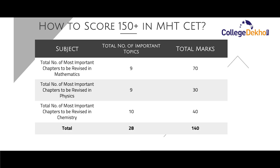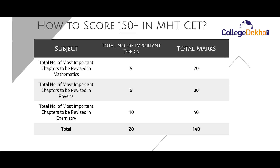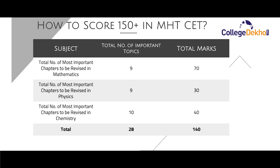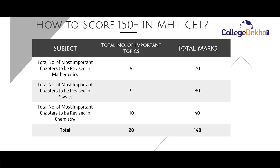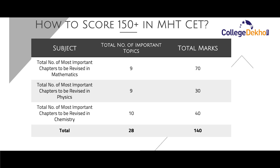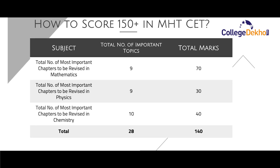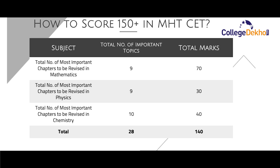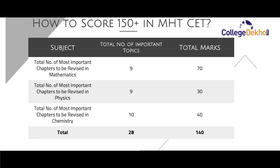The total number of most important chapters to be revised in Mathematics is nine, which will consist of a total of 70 marks. The total number of most important chapters in Chemistry is nine, consisting of 30 marks. The most important chapters in Physics consist of 10 topics for a total of 40 marks. Hence, for a total of 28 most important chapters across Physics, Chemistry, and Mathematics, you will be able to score 140 marks. To score more than 150, you will need to focus on additional topics in the MHT CET syllabus and practice the maximum number of mock tests.